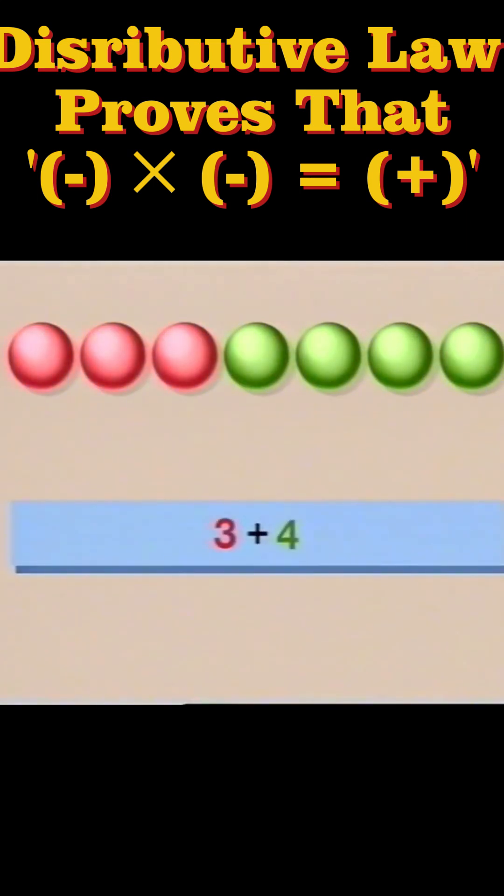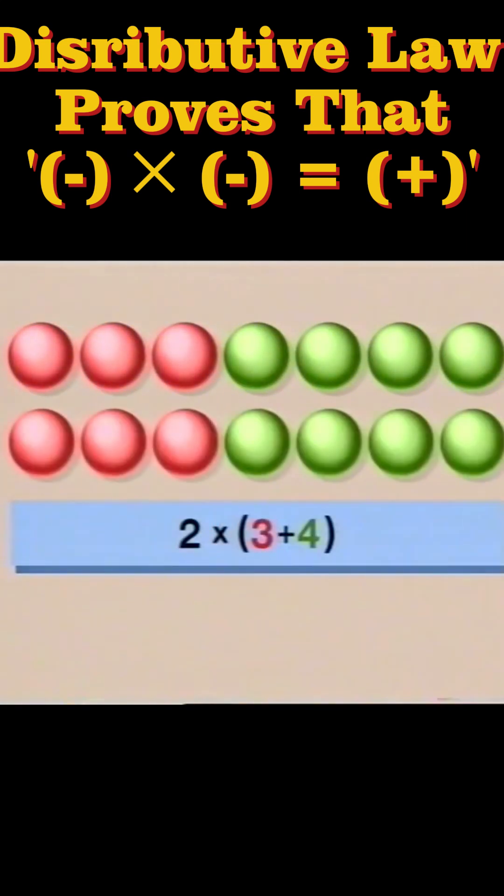7 is just 3 plus 4. So 2 times 7 is 2 times 3 plus 4. Splitting up 7, that's the same as 2 times 3 plus 2 times 4.